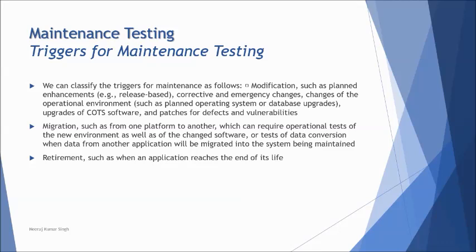Upgrades involve moving from one version to another, like moving from Windows XP to Windows 7. Service packs — SP1, SP2, SP3 — are different updates pushed to a release. Within an application, version numbers like 1.1, 1.2, 1.3 represent different versions of the same release. Whenever you make such changes, it invites regression testing.